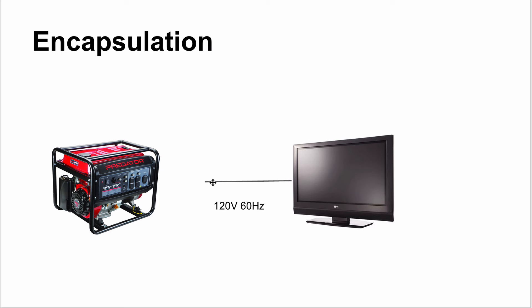These two devices connect through one simple interface: 120 volts at 60 hertz alternating current — a very simple API. That's what you want: create your classes so that they might be super complicated inside, but to the outside world all you need to know is 'give me power at this spec.' You can then use the same generator to connect many things that implement the same API.